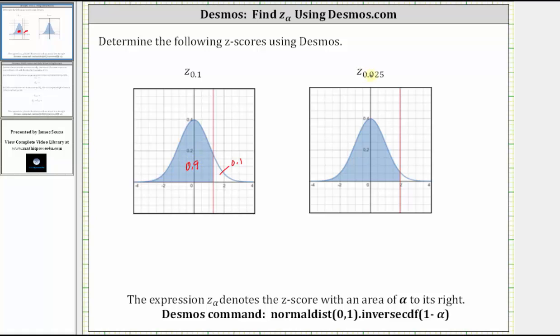Similarly, for Z sub 0.025, the area to the right of the Z-score is 0.025, which means the area to the left is one minus 0.025, which is 0.975.